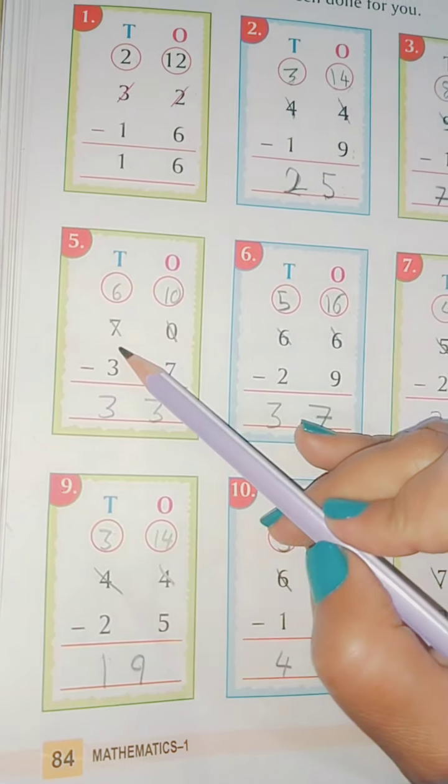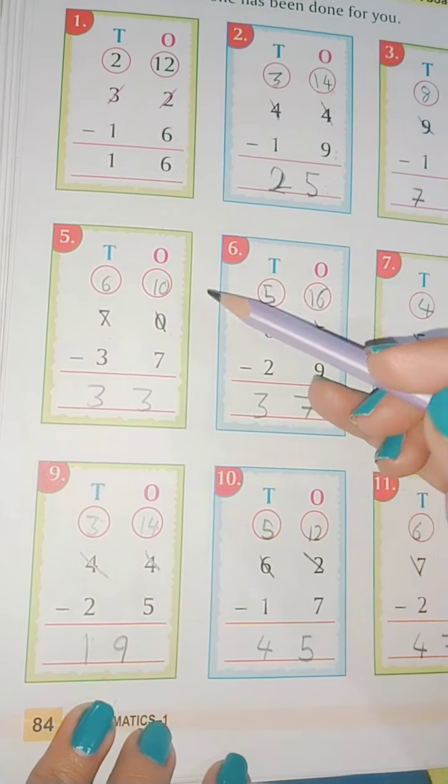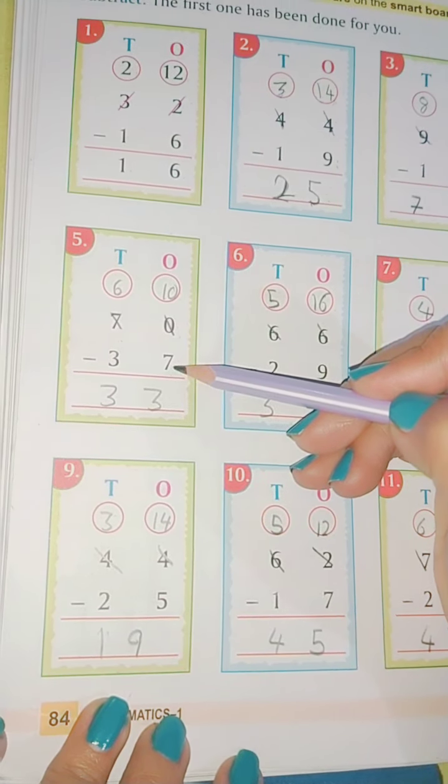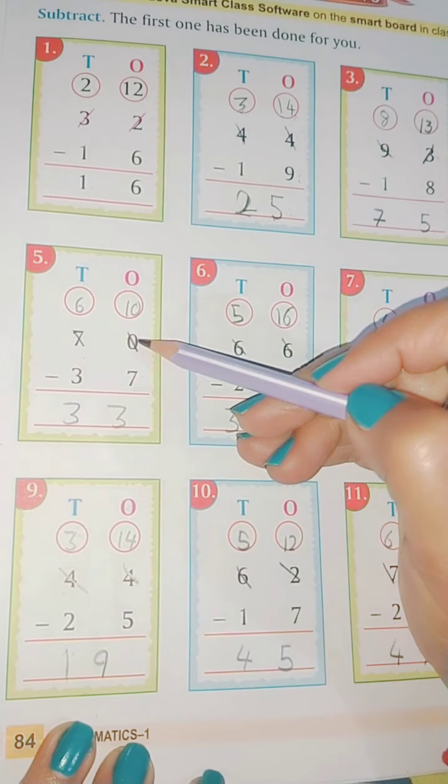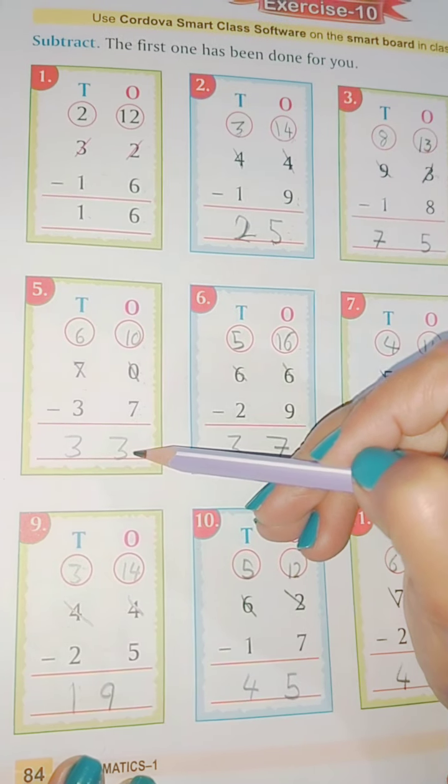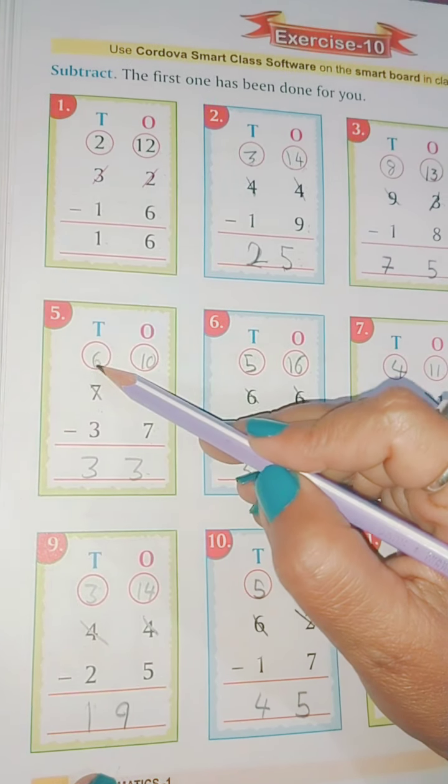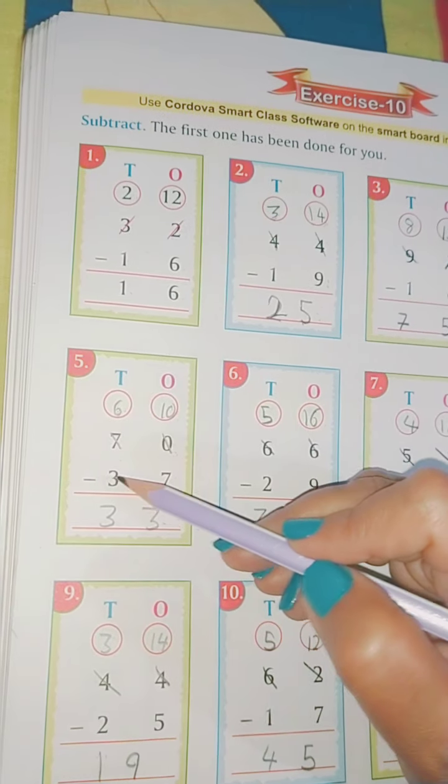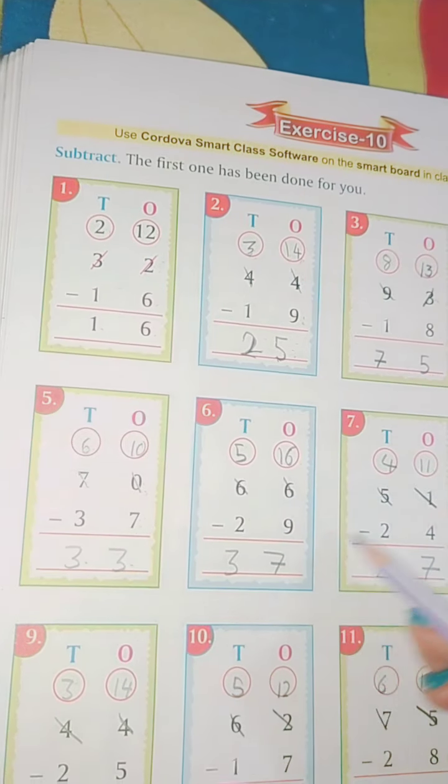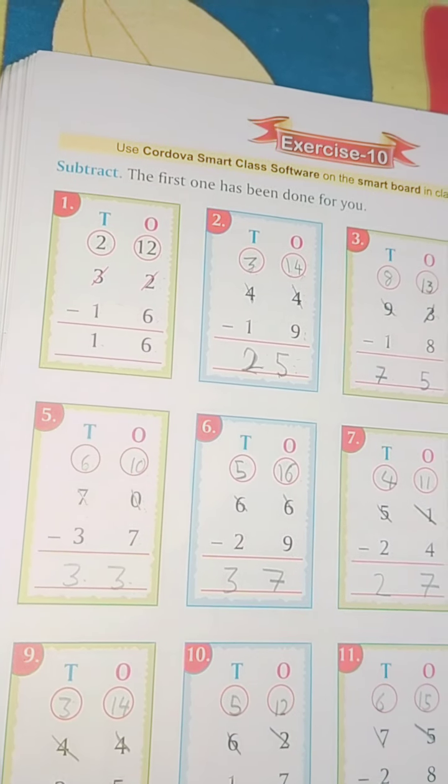Now see here, 70 minus 37. Now 0 and 7 is bigger number, so you have to borrow one number from 7 this side. So now it is 10. 10 minus 7 is 3. 7 ने one number 0 को दिया है, तो कितने बच गया? 6. 6 में से minus किए 3 तो 3. So you do these rest of the sums, and I will make you do in your live class also.